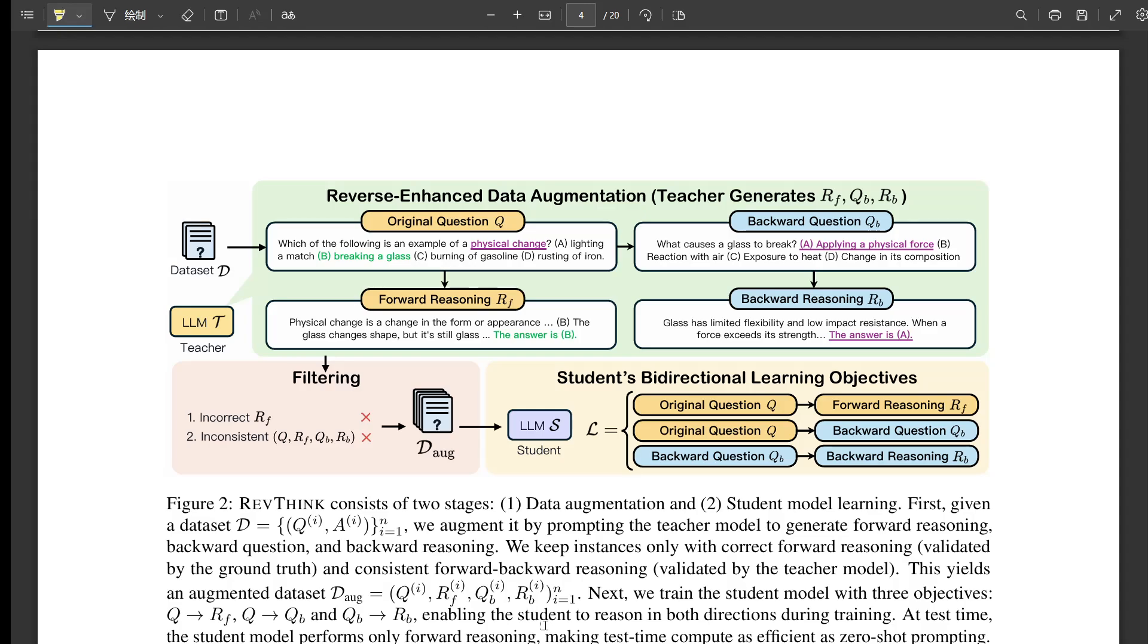The researchers didn't stop there. They did all these extra studies to figure out how Rethink was actually working. Trying to peek under the hood. One thing they found was that all three of those learning objectives were important: the forward reasoning, the backward question, and the backward reasoning. You couldn't just take one away. If you got rid of even one, the performance dropped. So it's all connected. It's not just about thinking backward, it's about how you train it to do that. Like giving it the whole toolkit for thinking in both directions.